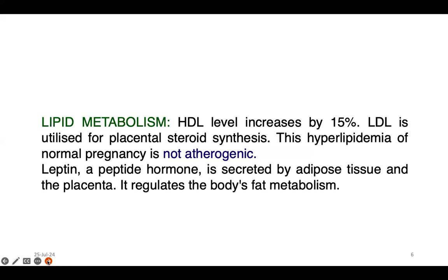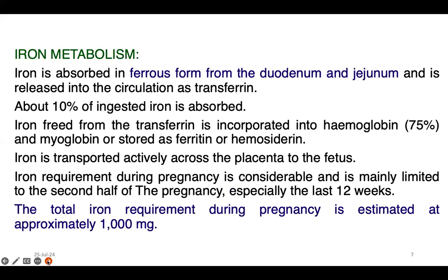Leptin, a peptide hormone, is secreted by adipose tissue and the placenta, and it regulates the body's fat metabolism. Regarding iron metabolism: iron is absorbed in ferrous form from the duodenum and jejunum, and is released into circulation as transferrin. About 10% of ingested iron is absorbed; from transferrin, iron is incorporated into hemoglobin.